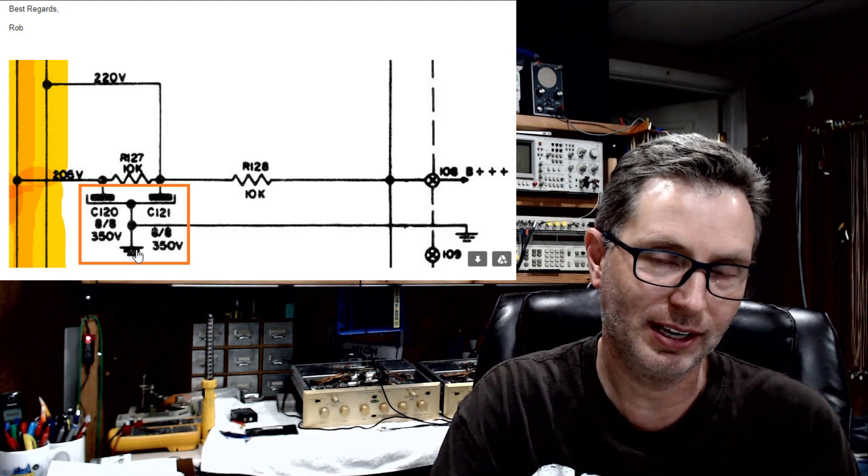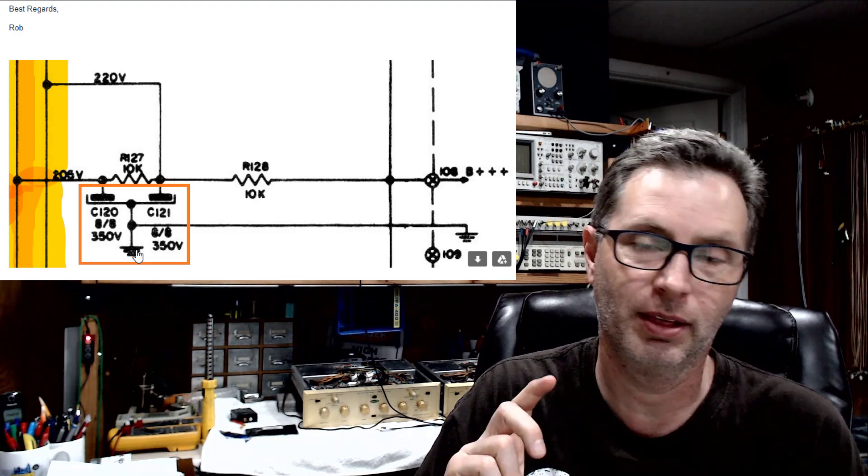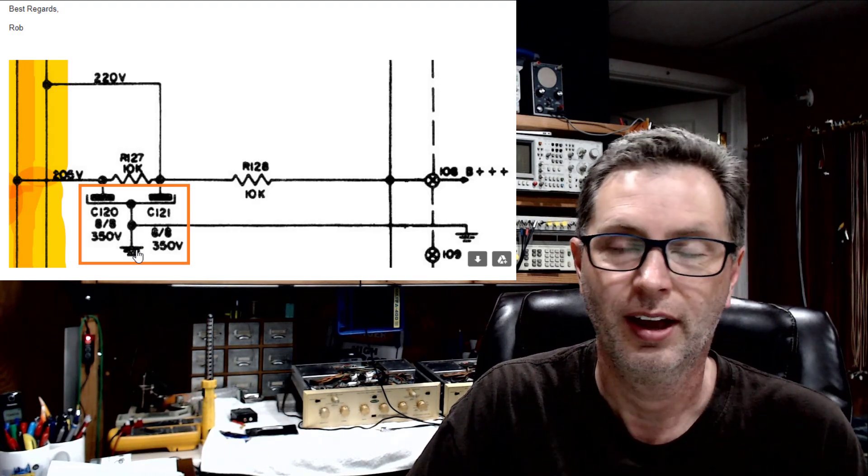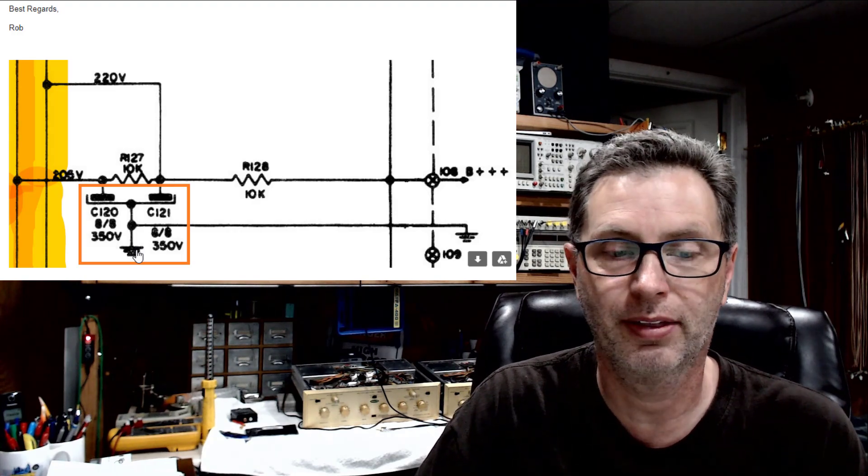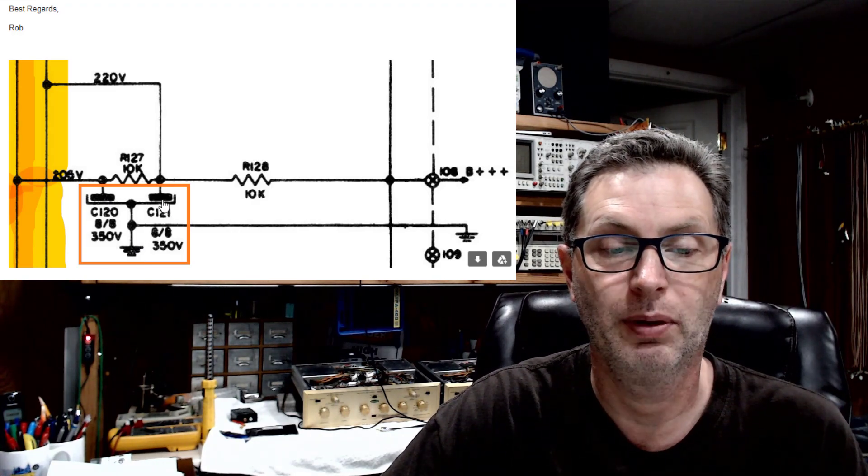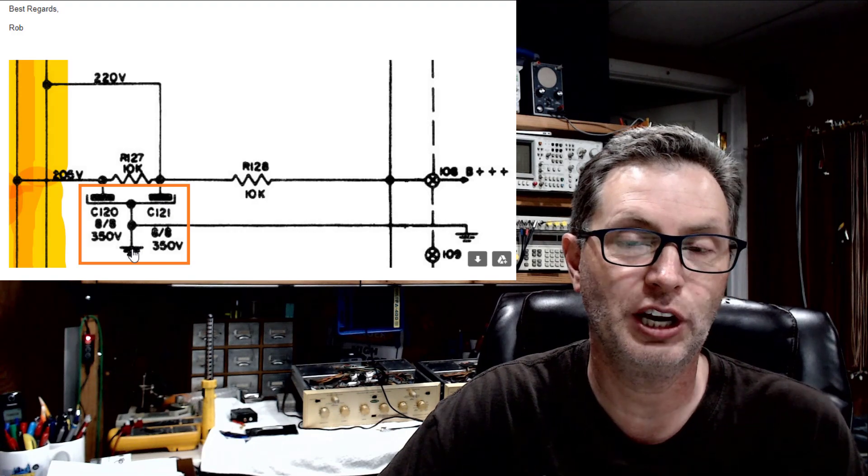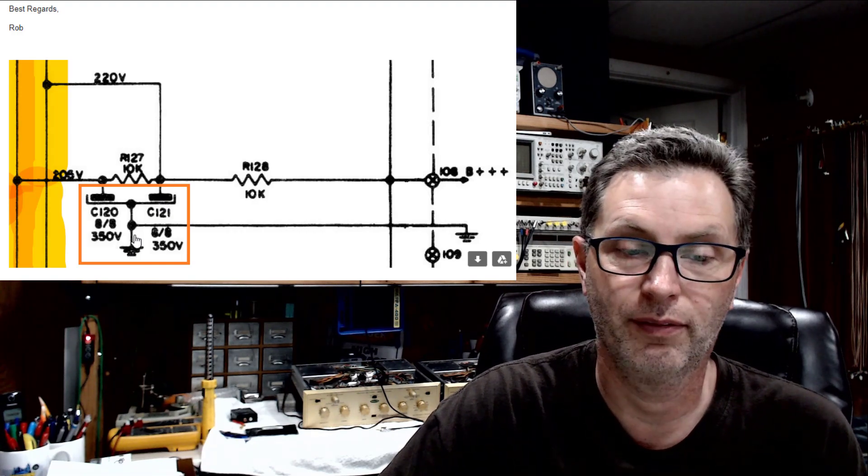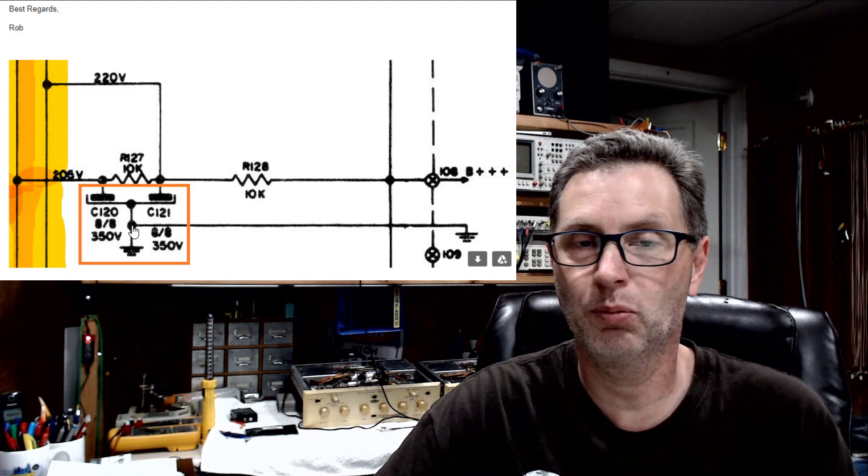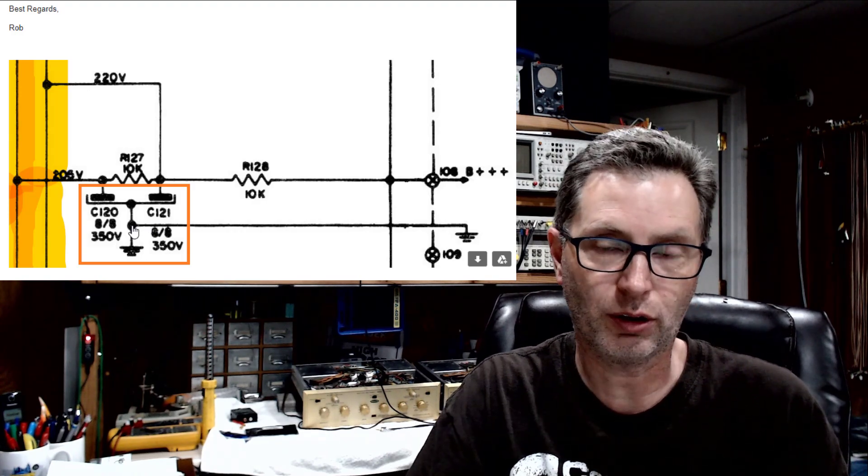But I'm betting if you look and find C120 and 121, it'll be a little round metal capacitor and it'll have two tabs coming out of the top side of it, and that would be these connections here. And then the chassis of it would be tied off to ground. Sometimes these are done in what's called a firecracker style capacitor.